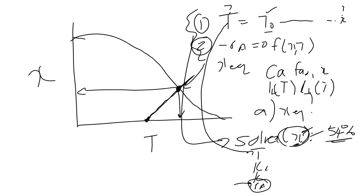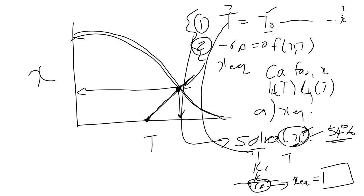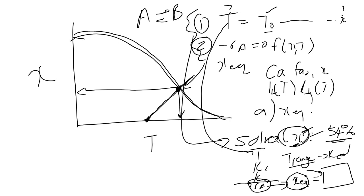When you solve your rate equation and set it equal to zero, you end up with the x-equilibrium equation published in the slides. This is a simple isomerization reaction where A reversibly goes to B. Make sure you understand that x-equilibrium comes from setting the rate equal to zero. For a range of T values, you can solve K_c and then plot x-equilibrium to construct that line.